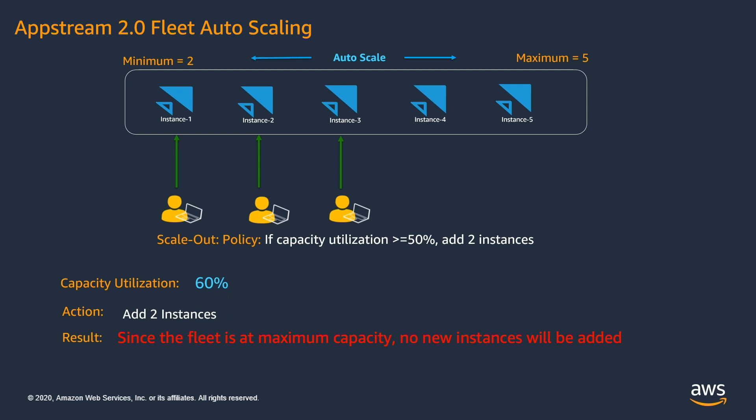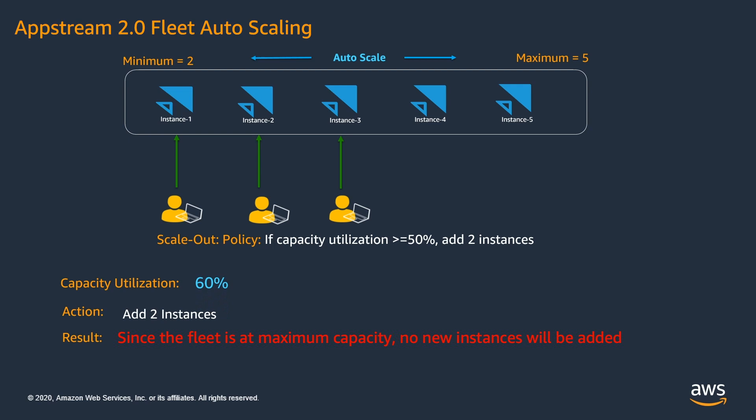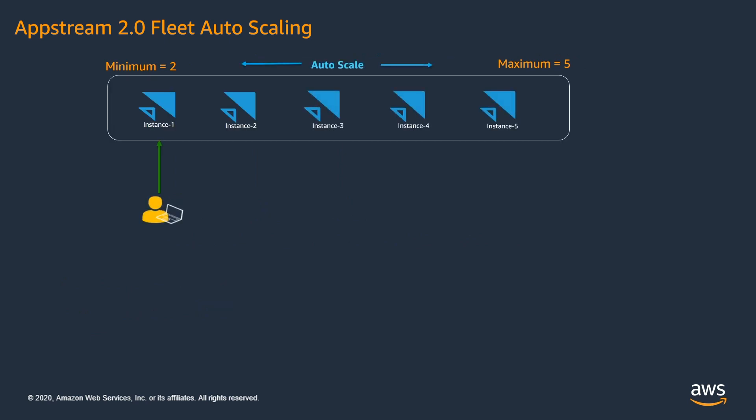This is how a scale-out policy works. Now let's see how a scale-in policy works. Let's consider a fleet where 5 streaming instances are running but only 1 user is connected. For this demo, we have defined a scale-in policy that removes 2 instances from the fleet if the capacity utilization is less than 35%. With this configuration, let's see how our scale-in policy will remove instances from the fleet based on the user demand.